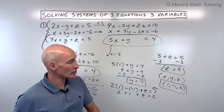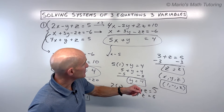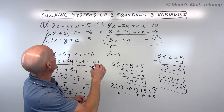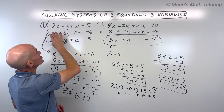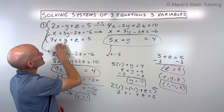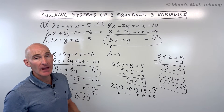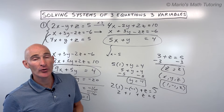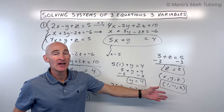If you want to check your answer, you can take these x, y, and z values and put them into each equation. You should get 5 for the first, negative 6 for the second, and 5 for the third. If it makes all the equations true, you know this is the common point of intersection.